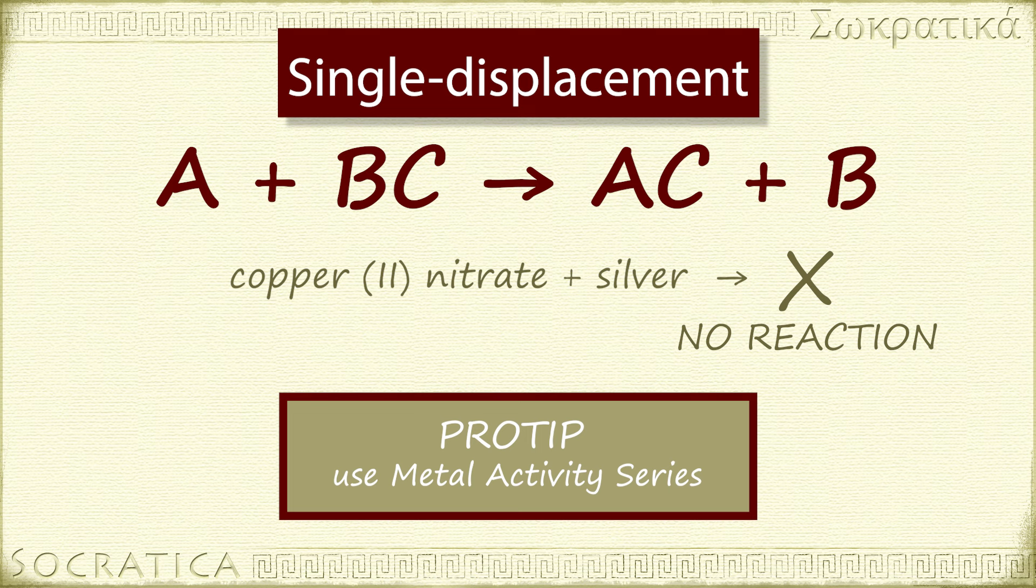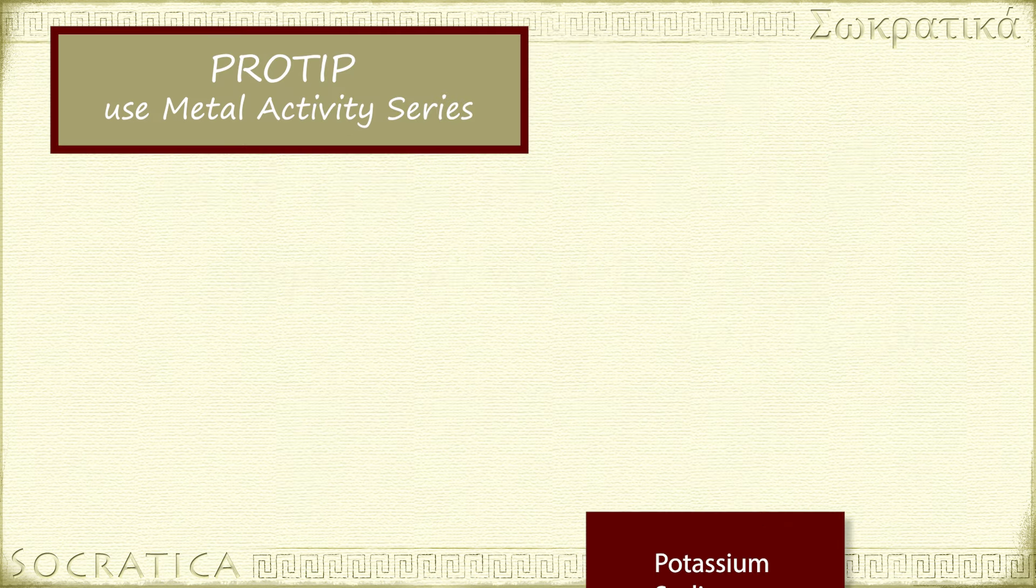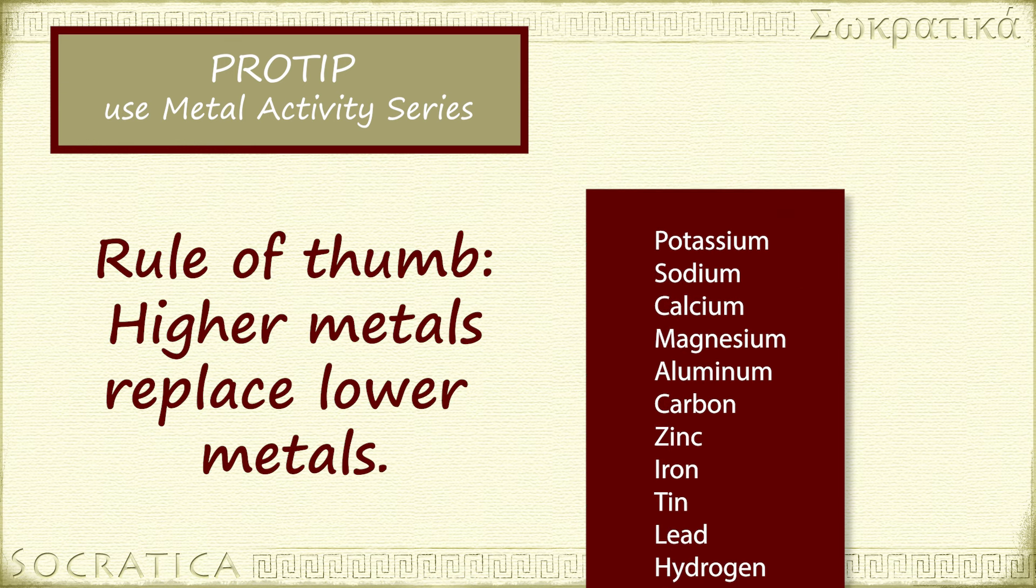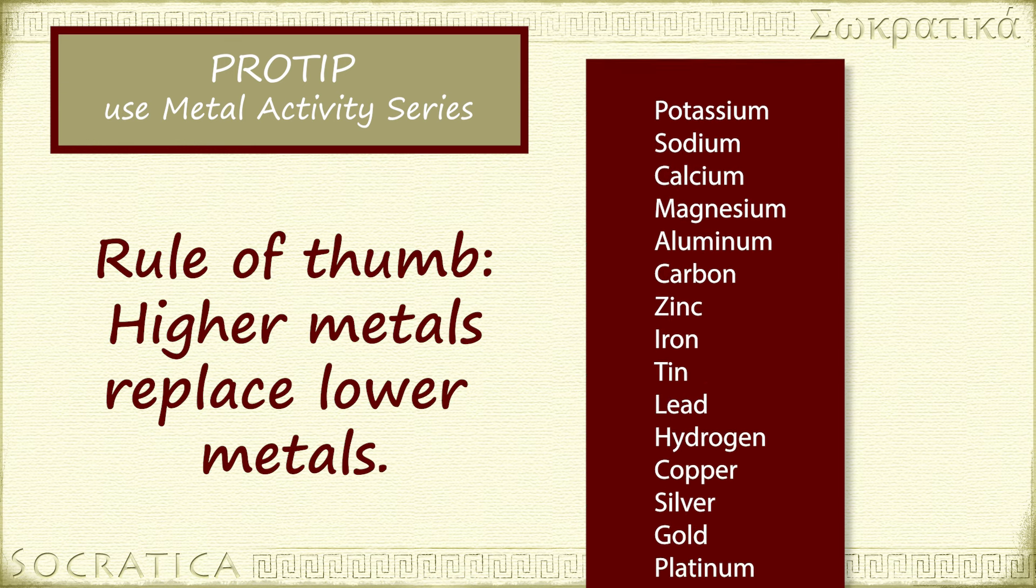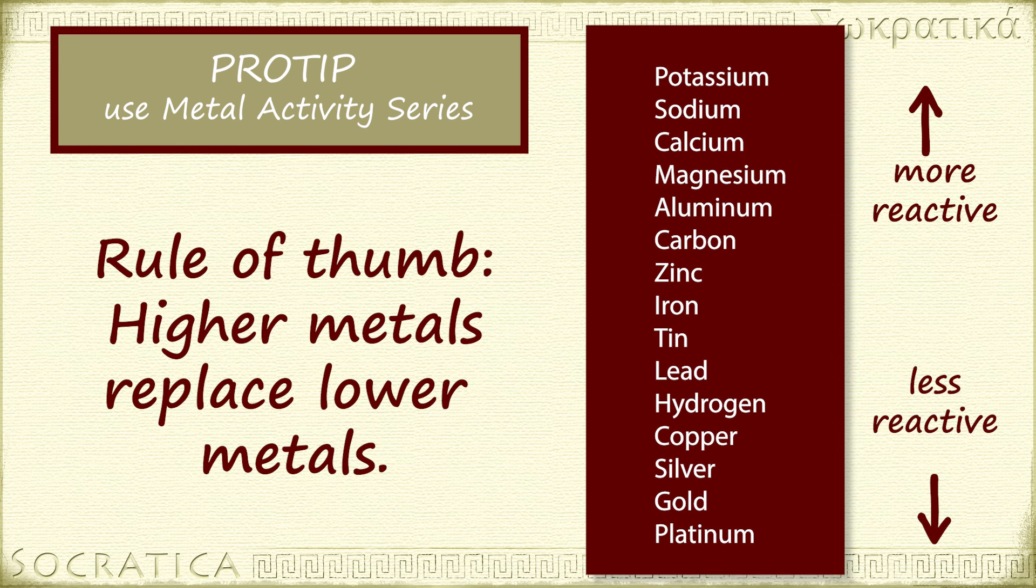This isn't something anyone would expect you to reason out. This is a table of data that was experimentally determined. In general, a metal higher up in the activity series will be able to replace a metal lower down. So, you can see copper will replace silver, but not the other way around.